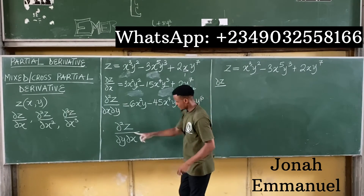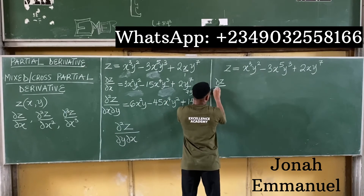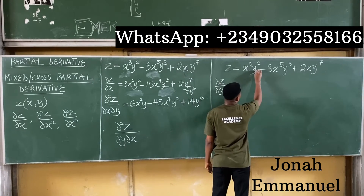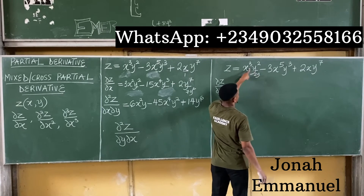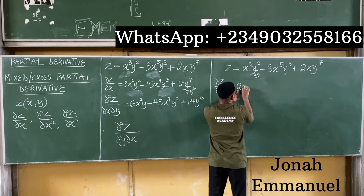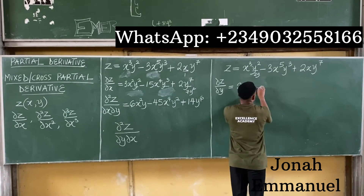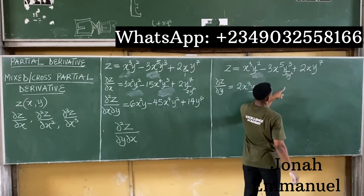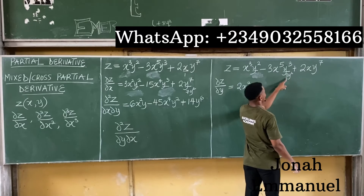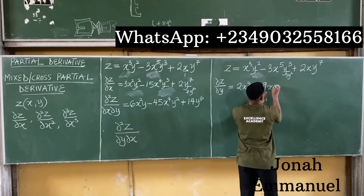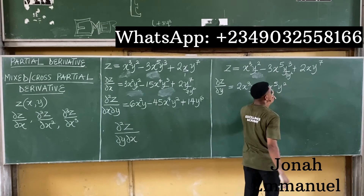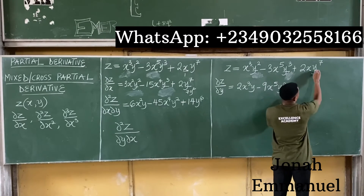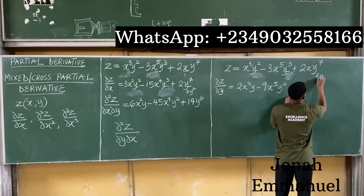Since y comes first this time, we focus on just the y terms. Differentiating y squared gives 2y, and multiplying by x cubed gives 2x³y. Then differentiating y cubed gives 3y squared; 3 times 3 is 9, giving minus 9x⁵y². Differentiating y to the power 7 gives 7y⁶, so the last term becomes 14xy⁶.